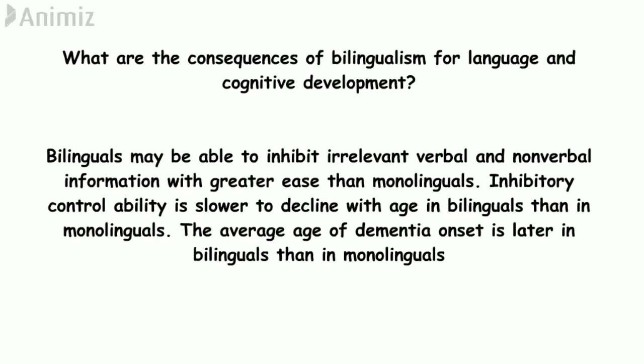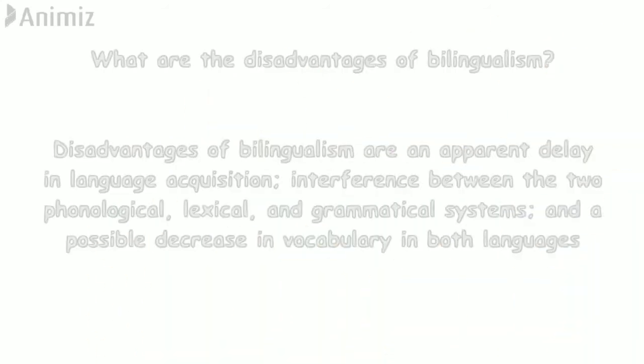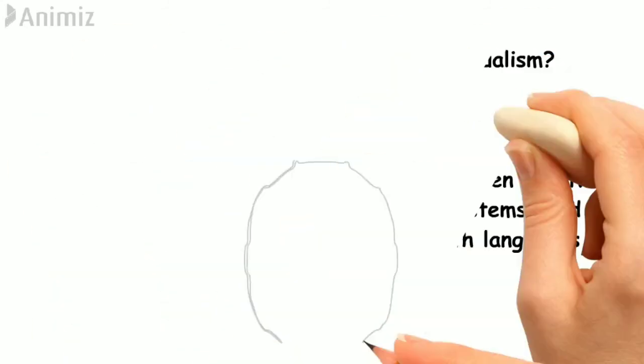Some disadvantages of bilingualism include an apparent delay in language acquisition. When a child is exposed to too many languages, they may take more time to acquire mastery of a particular language, because they are confused by the interference between the two phonological, lexical, and grammatical systems. There may also be a possible decrease in vocabulary in both languages.